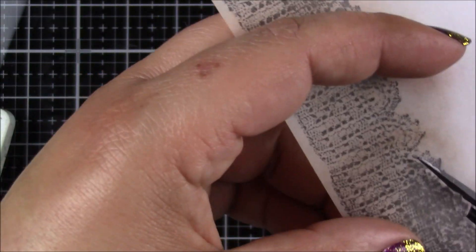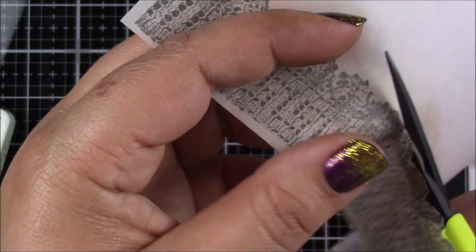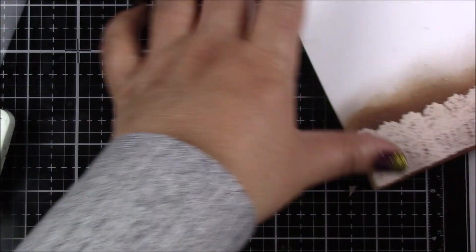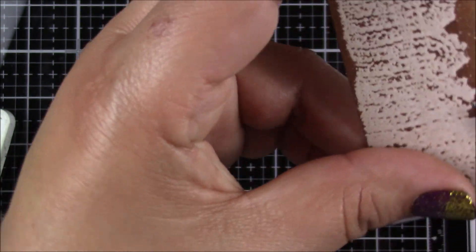Then I fussy cut around the image, and you will also fussy cut around the other image that you created from the white cardstock as well.